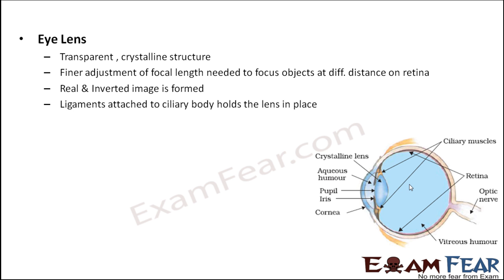Next is the eye lens. The eye lens is a transparent crystalline structure. The focal length of the eye lens decides exactly where the image will be formed. The image distance is fixed because the image has to form on the retina.